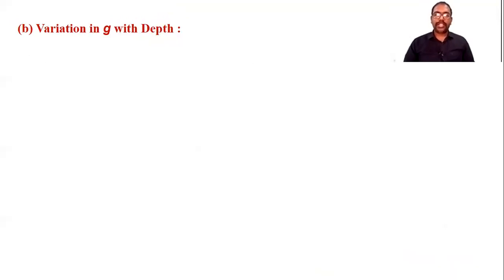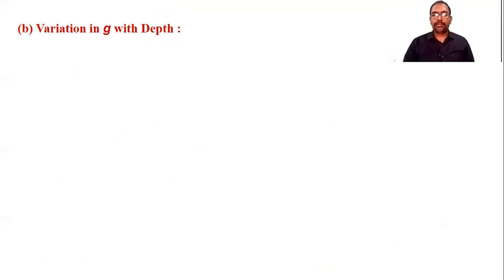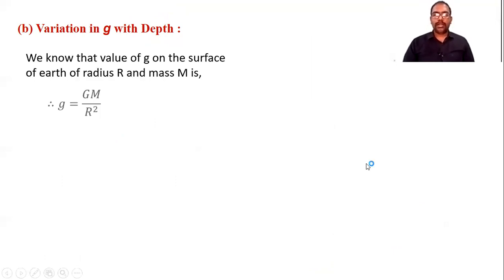Now we start the variation of acceleration due to gravity with depth. Again, we start with the same procedure. We consider one body placed on the surface of Earth, and the acceleration due to gravity on the surface is g = GM/R².